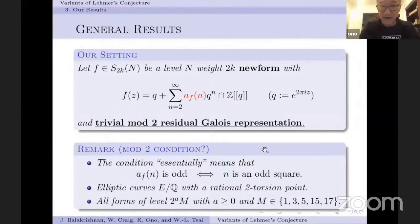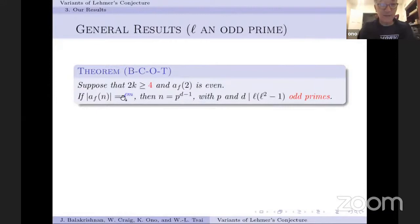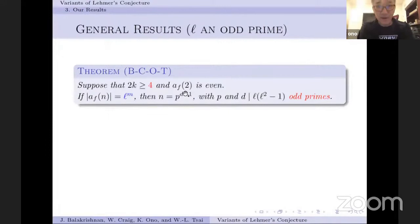These integers m are basically conductors — the so-called Artin conductor. By standard arguments in algebraic number theory, there aren't any kernel fields that could arise in Galois theory corresponding to anything but even Hecke eigenvalues for those representations. The theorem I described for tau is now a theorem for all these Hecke eigenforms under these conditions. The only catch is I need the weight to be at least 4. Any even weight form whose weight is at least 4 and whose second coefficient is even satisfies the theorem: if L is an odd prime, then L^m being a Fourier coefficient requires the location N to itself be a prime power, with the exponent D-1 where D is an odd prime dividing L(L²-1).